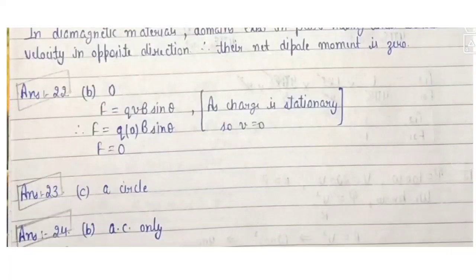Question 22: what is the magnitude of force experienced by a stationary charge in a uniform magnetic field? Since the charge is stationary, velocity is zero. Using F = QVB sinθ, with V = 0, the force is zero.